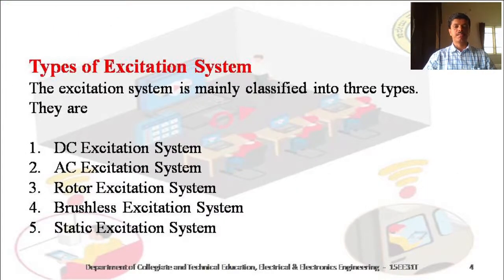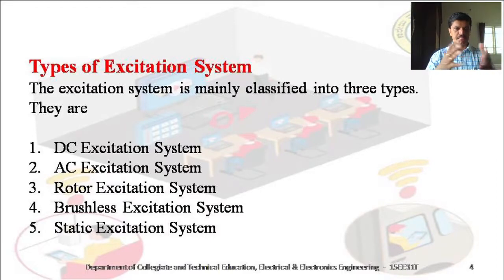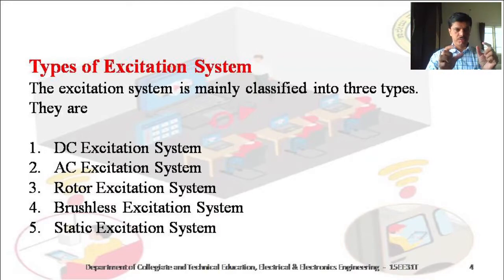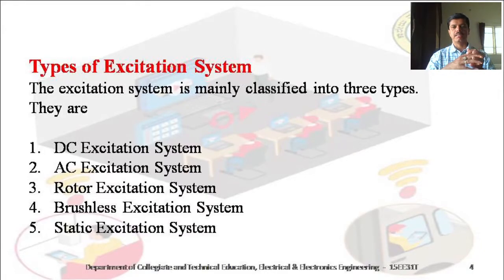Now, the different types of excitation system. We have different types: one is the DC excitation system. Today, we are only concentrating on the static excitation system, and we should know a brief introduction about DC and AC excitation systems. After that, we will discuss how the static excitation system provides a constant regulated voltage for the field winding of the rotor of a synchronous generator.